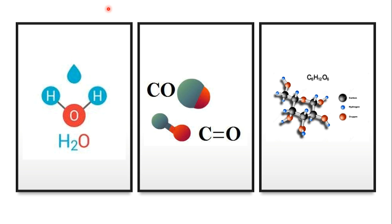Moving on to molecular compounds: all molecules in a compound are identical in shape and size. A molecule of carbon monoxide has just one carbon atom and one oxygen atom. A water molecule has two hydrogen atoms and one oxygen atom, as you can see here. And carbon monoxide has one carbon atom and one oxygen atom.